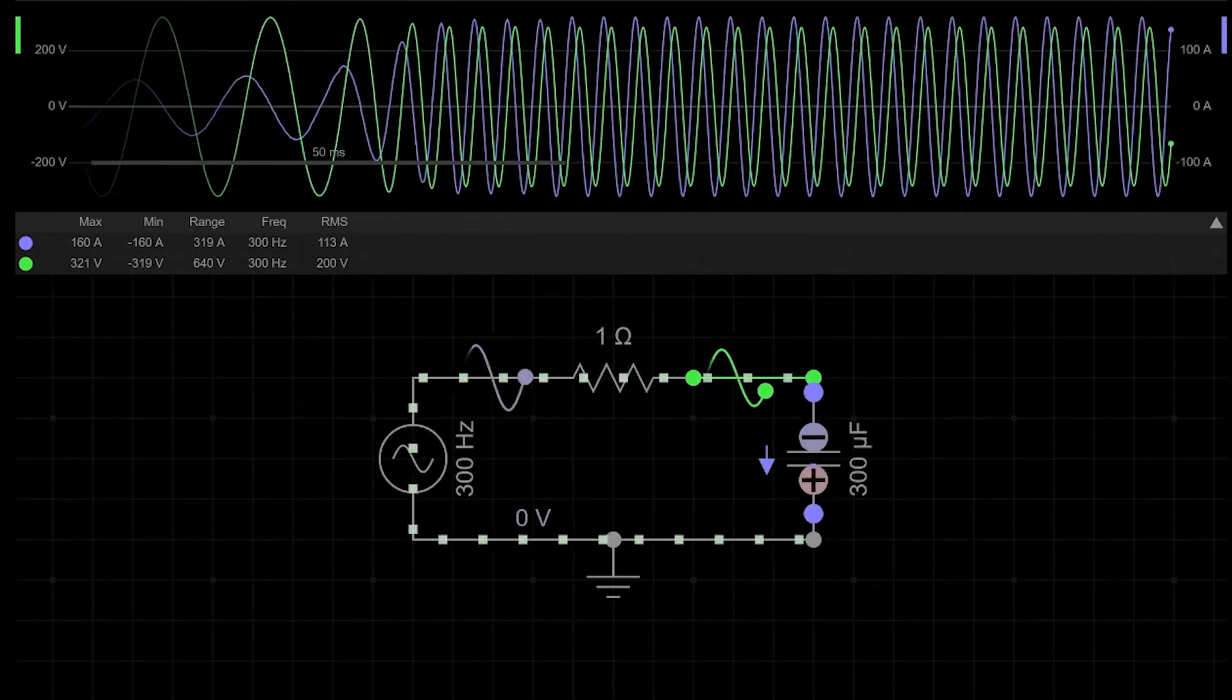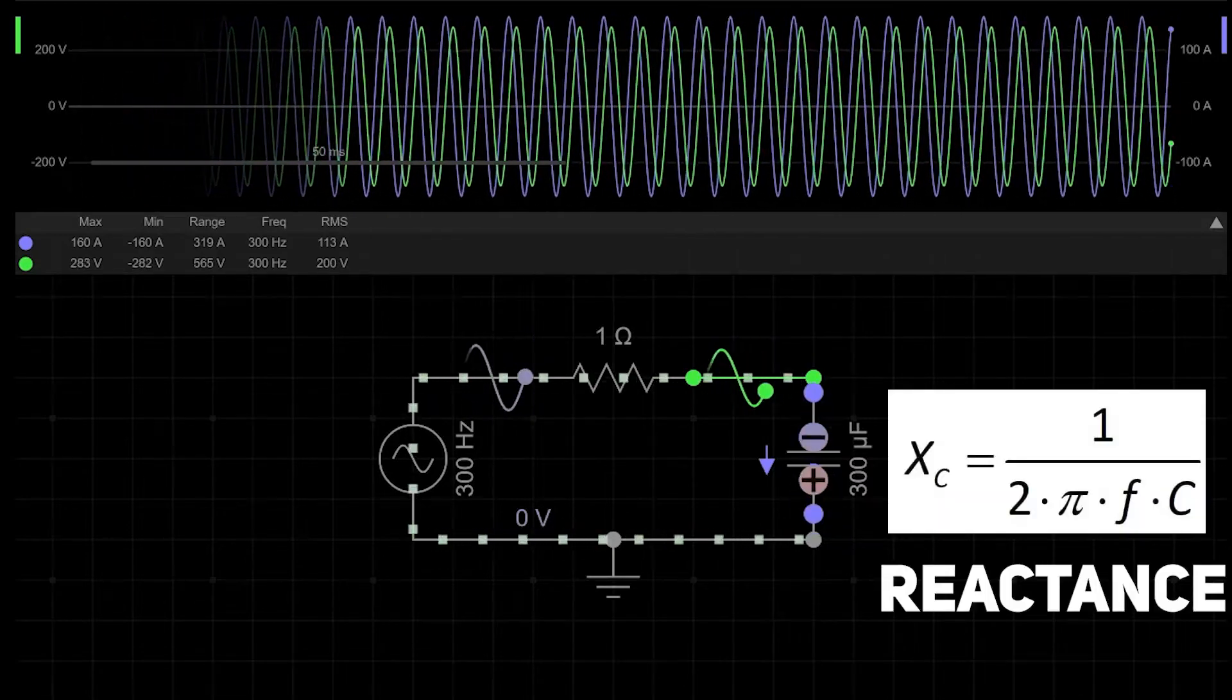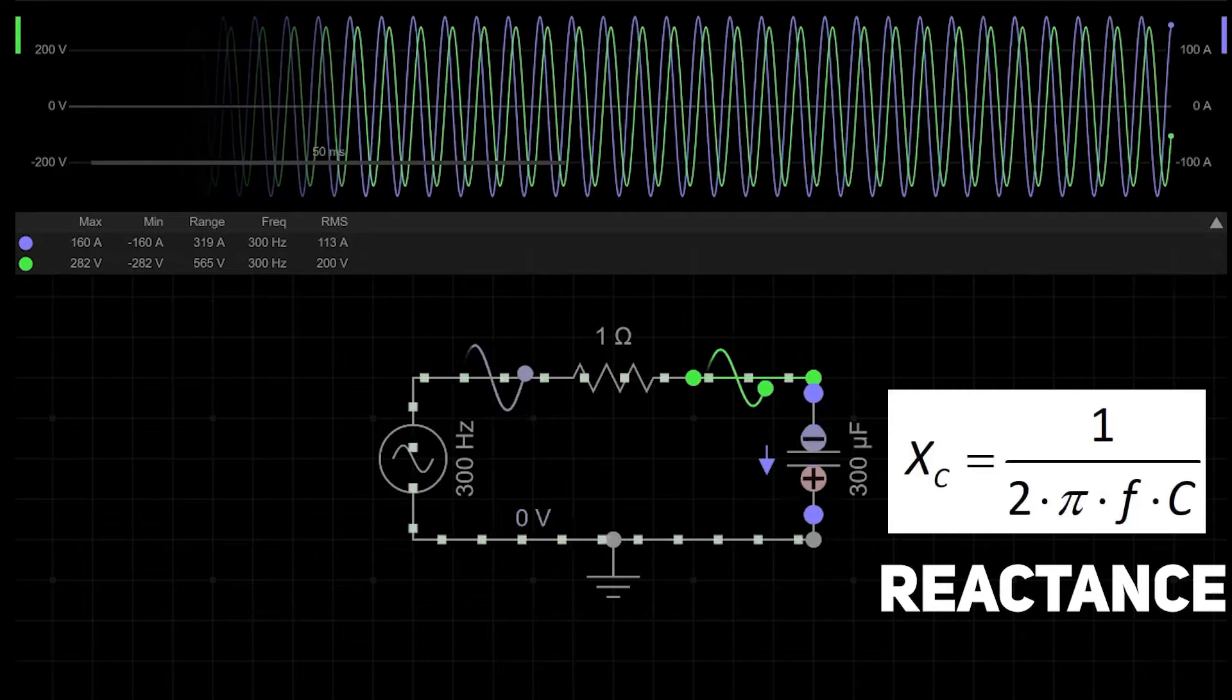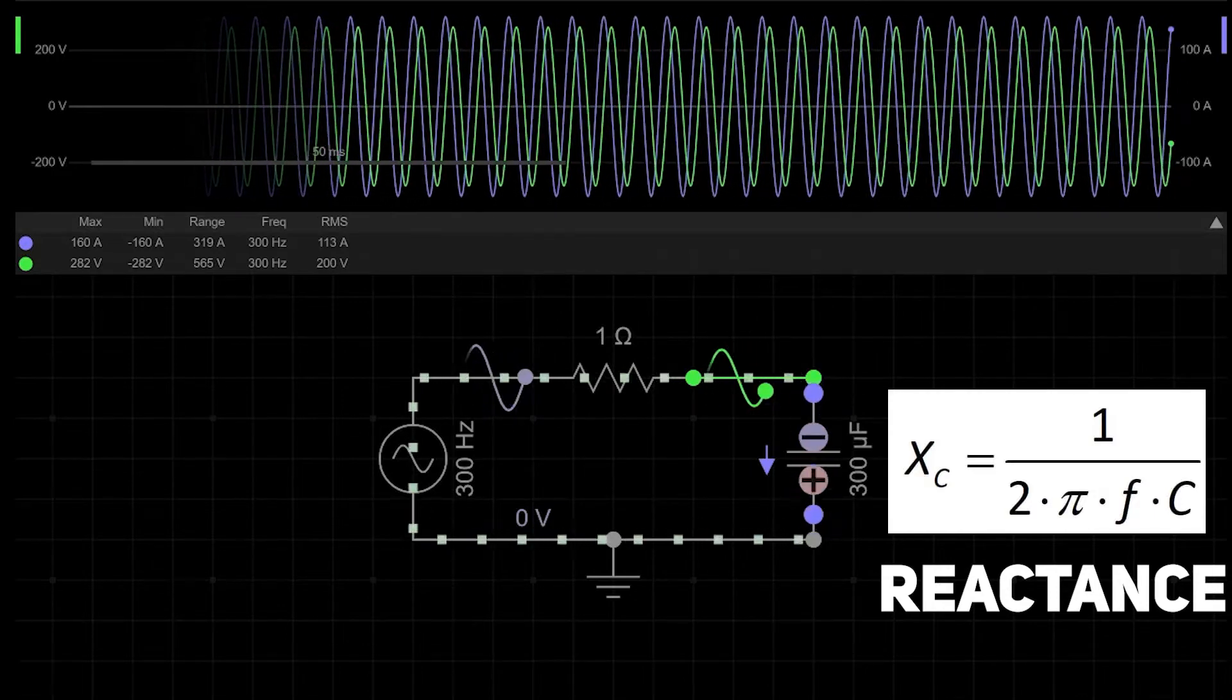To exactly calculate this current, there is another formula of capacitor reactance, which is the analog of resistance in DC circuits. Reactance measurement unit is ohms, same as resistance, where pi is a constant and f is frequency of the signal.